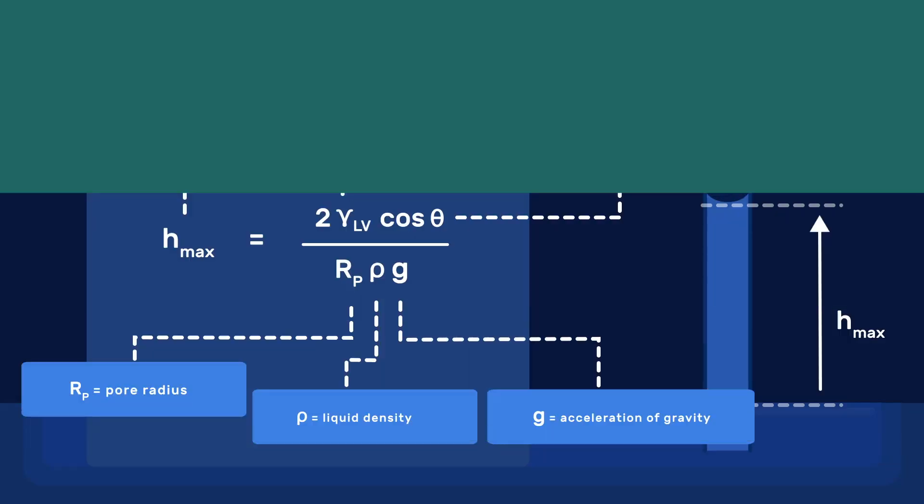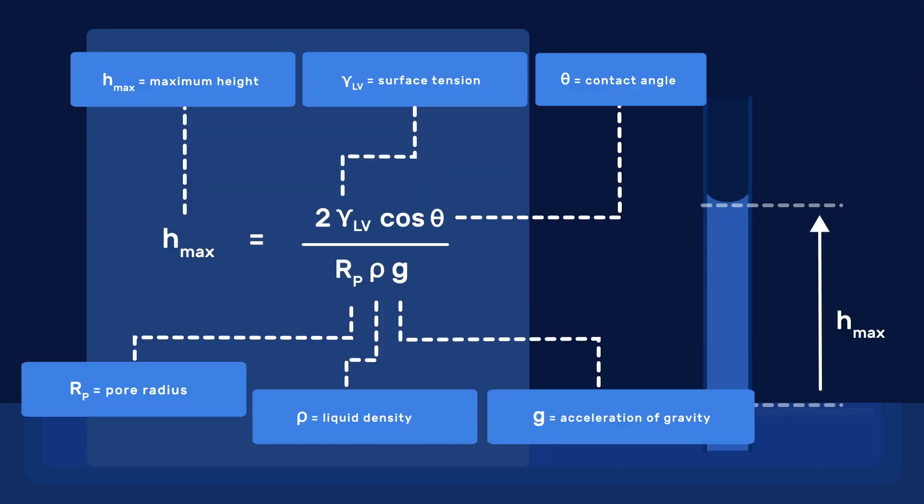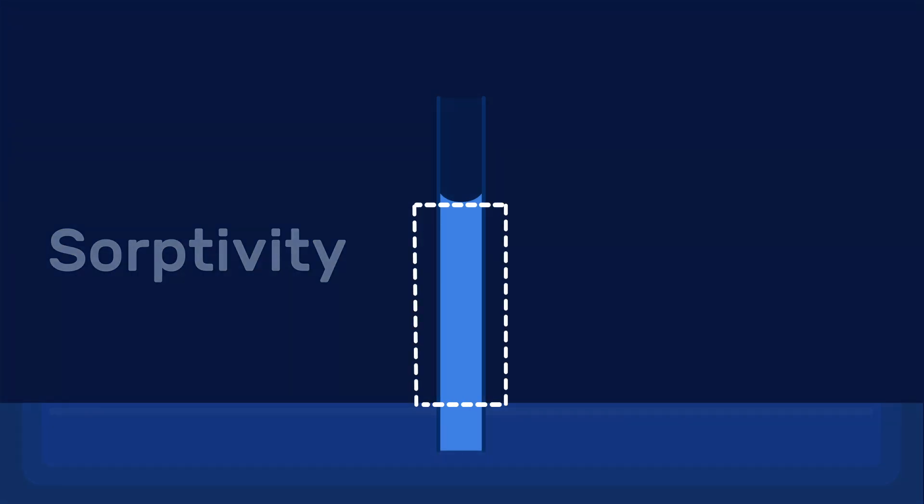In a previous video, we saw that the maximum height of capillary rise increases with decreasing pore size. In this video, we analyze the rate of rise in terms of sorptivity, a property of both the porous solid and the liquid. We also show how this sorptivity is measured.